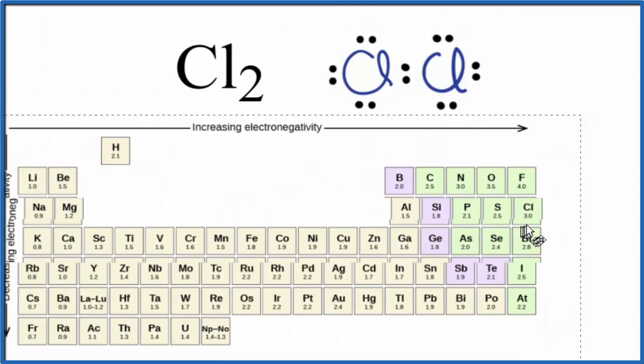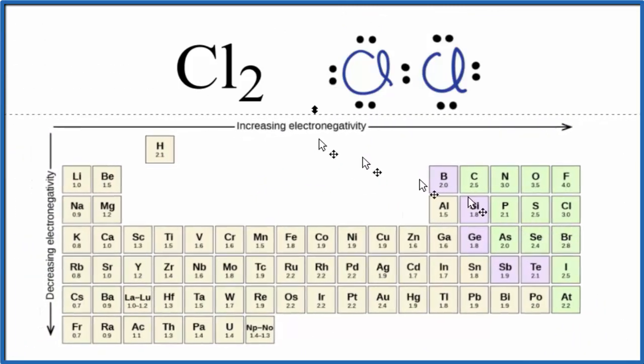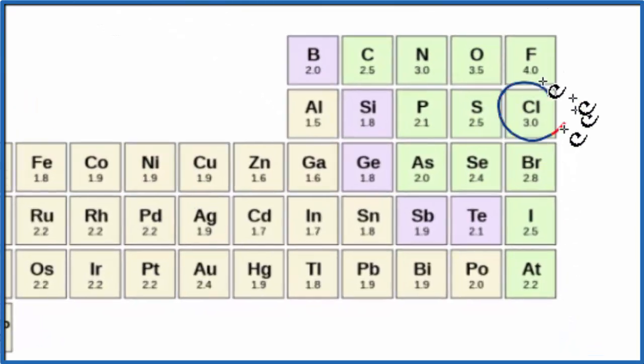This periodic table here has electronegativity values listed. We're looking for the difference between the two atoms bonded together to determine whether it's ionic or covalent. When we look at chlorine right here, it's 3.0, right next to fluorine, which is the most electronegative element on the periodic table.